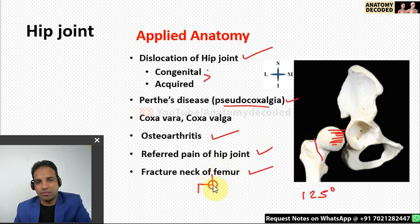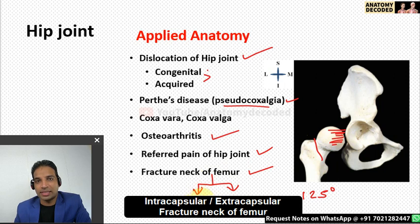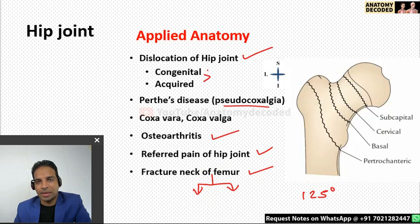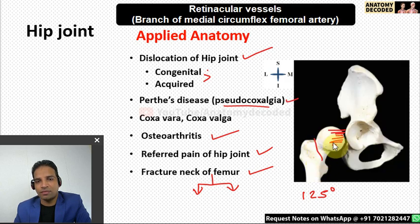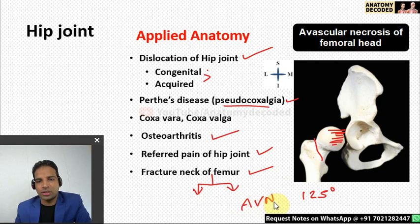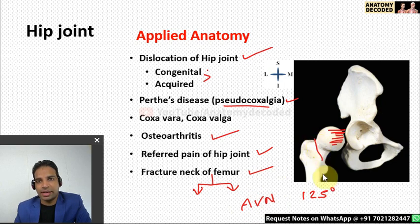Fracture of the neck of the femur is very common in old age and is of two types: intracapsular and extracapsular. Intracapsular subtypes include subcapital, basal, and cervical. Intracapsular fractures carry a complication of avascular necrosis due to damage to the retinacular vessels supplying the head of the femur.